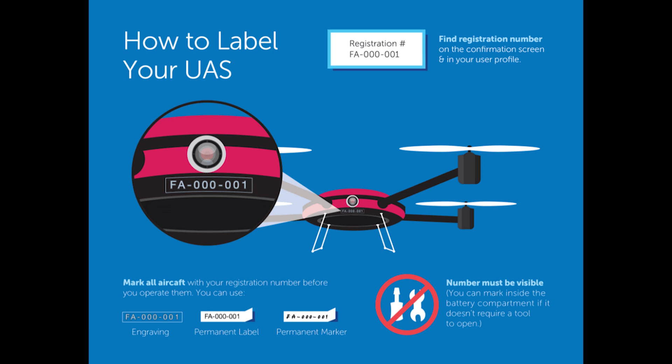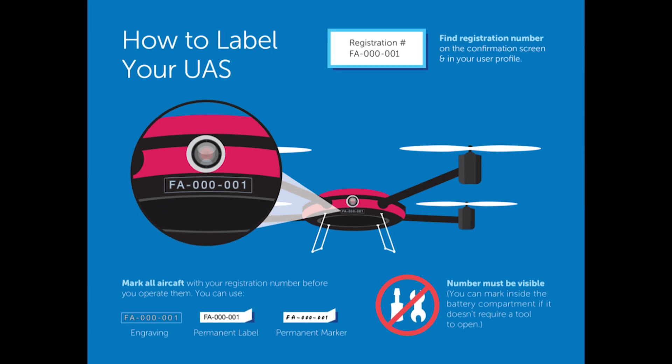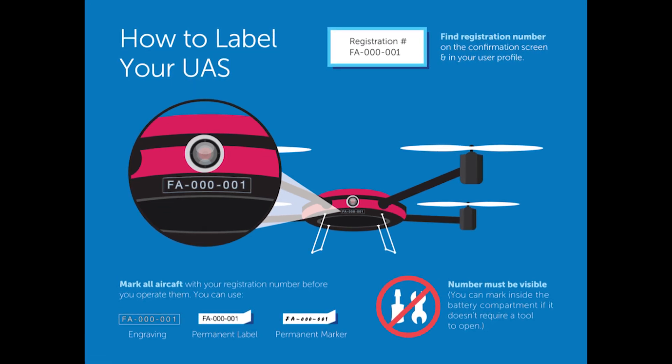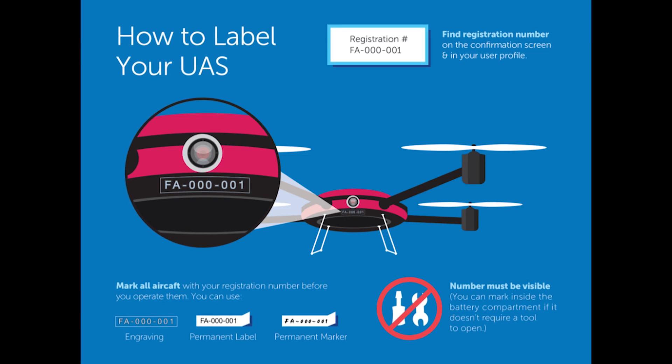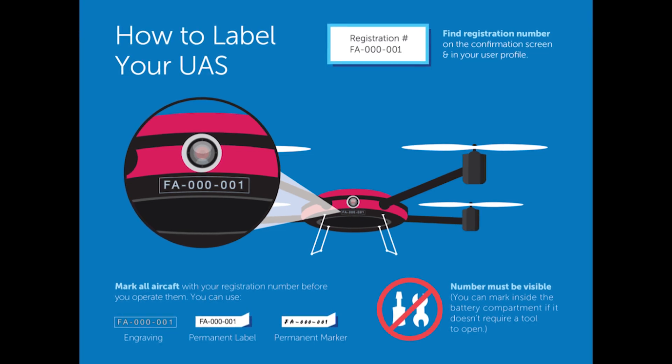The FAA Drone Zone is where you register your drone either recreationally or commercially. Once registered, you'll want to label your drone with that registration number. As of February 25th, 2019, US law states that all registration numbers must be visible on the outside of the drone.